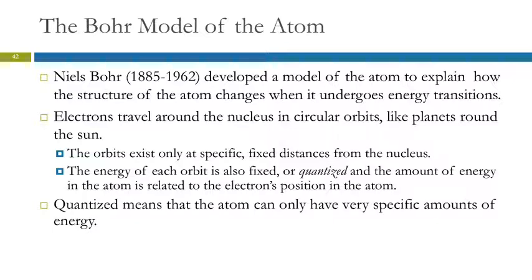So Niels Bohr developed a model to explain what changes are happening when energy transitions occur. In Bohr's model, we've got electrons traveling around the nucleus in circular orbits, much like the solar system, where the sun would be the nucleus and the planets would be electrons. The electrons are traveling around in predictable, nice, Newtonian-type orbits. The orbits exist only at specific fixed distances from the nucleus, and so the energy of each orbit is also fixed. We say it's quantized. The amount of energy in the atom is related to the electron's position in the atom.